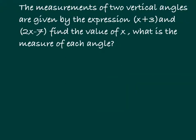Let's get along with our question. The measurements of two vertical angles are given by the expression x plus 3 and 2x minus 7. Find the value of x, what is the measure of each angle? Let's start off by writing down the question.